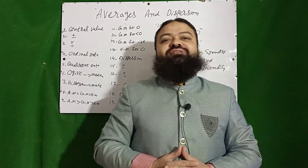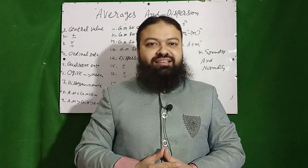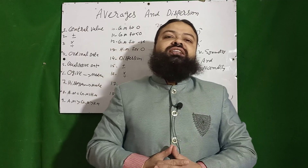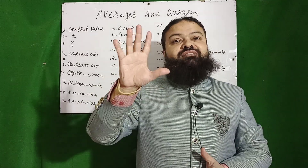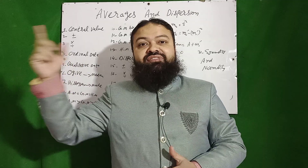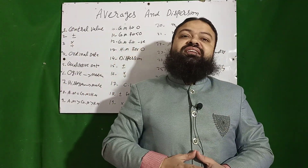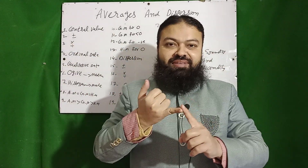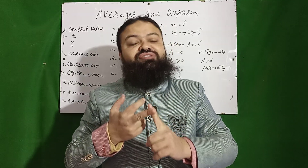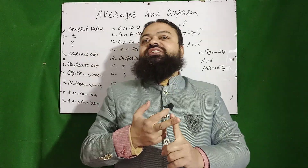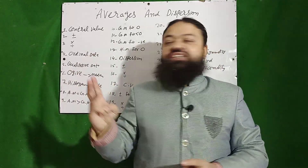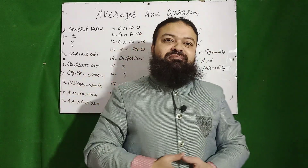A very important interview and written test question: when are arithmetic mean, geometric mean, and harmonic mean all equal? When all the values of the data set are the same — for example, five values all equal to seven: 7, 7, 7, 7, 7 — then arithmetic mean will be seven, geometric mean will be seven, and harmonic mean will also be seven. When all values are the same, these three averages are always equal.